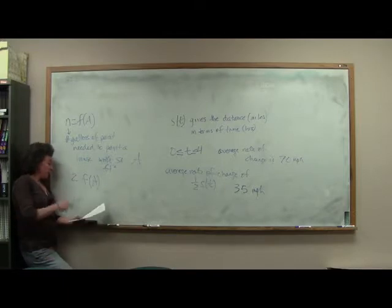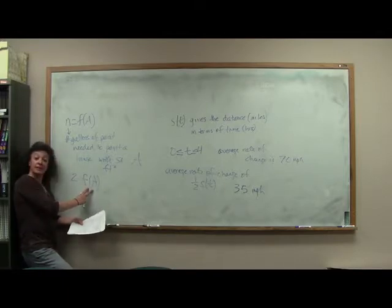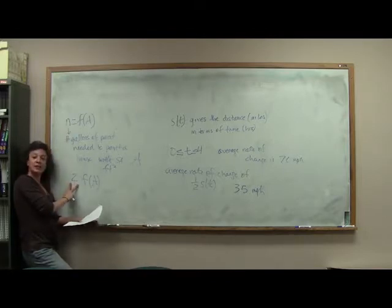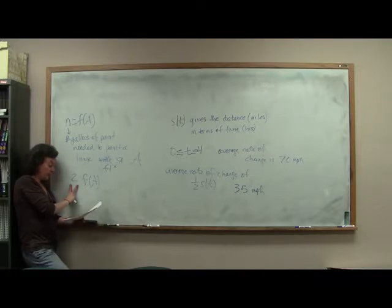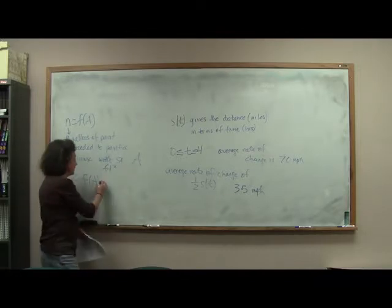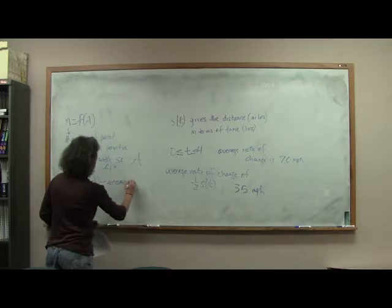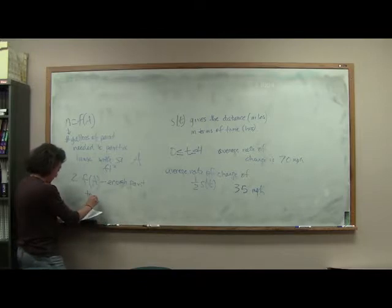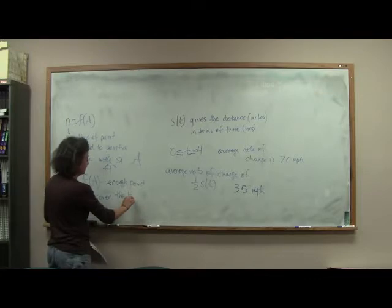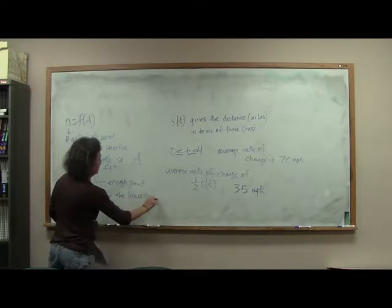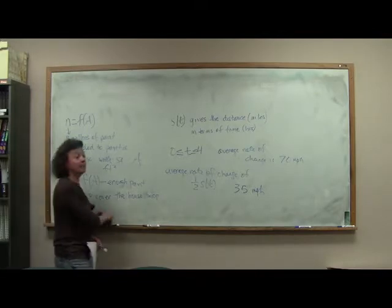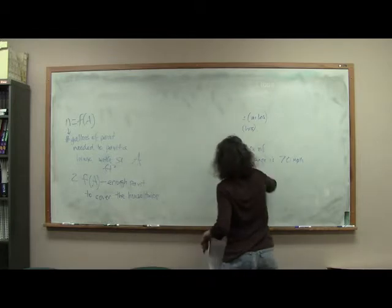Well, what are we doing? We still have f of a, but we're multiplying it by 2. In other words, aren't we buying twice as much paint? So the way we can look at this is it's enough paint to cover the house twice. Right? If n is enough to cover it once, well then 2n is enough to cover it twice.